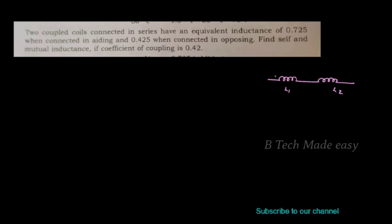This is the aiding condition, shown using dot convention. This is the series aiding connection. The equivalent inductance for the aiding condition, L equivalent aiding, is equal to 0.725 Henry.